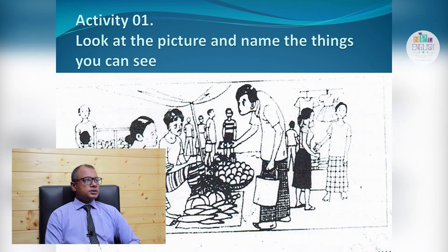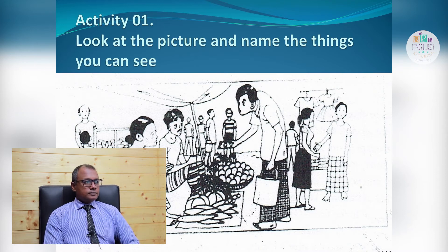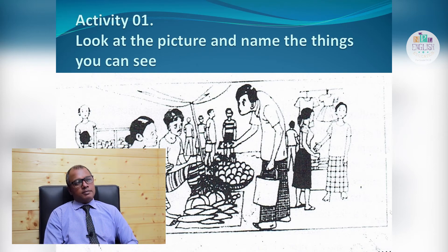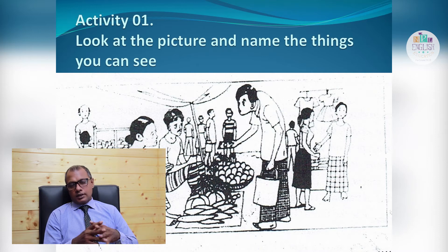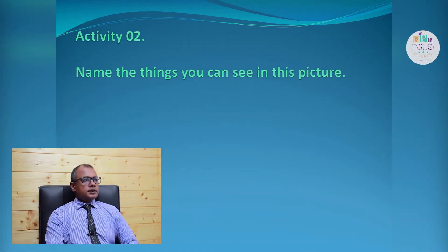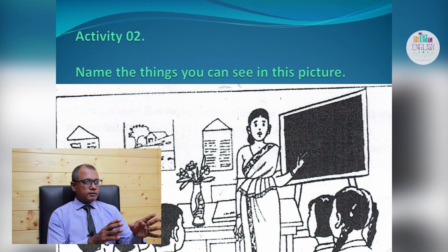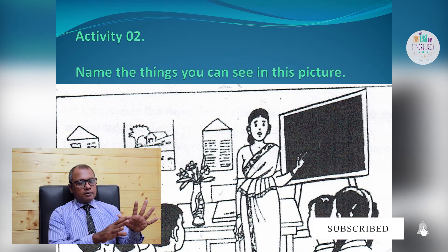Activity One: Look at the picture and name the things you can see. This is a fairly simple activity. The picture is about a fair. There are a number of people: vegetable sellers, customers, ladies, young persons, children. There are also various vegetables and fruits. Activity Two: Name the things you can see in the picture. This picture is about a classroom. There are students, a teacher, a blackboard, a flower vase, a timetable, and other things.